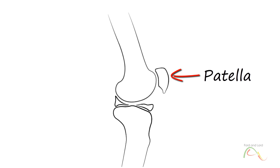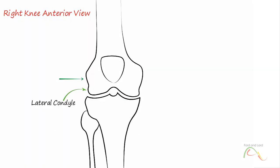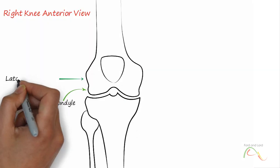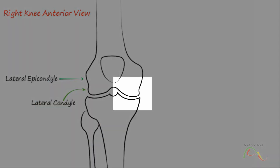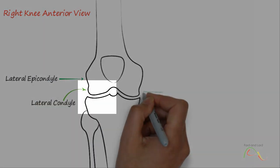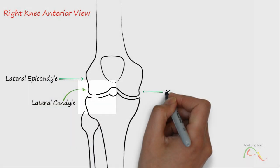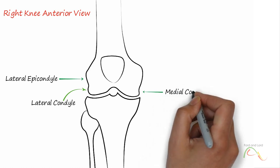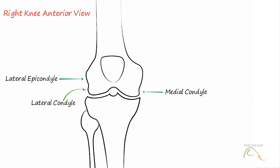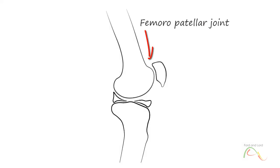The patella, which is also known as the kneecap, glides along a groove located at the distal end of the femur anteriorly. The joint therefore essentially consists of three articulations. The medial tibiofemoral joint and the lateral tibiofemoral joint are located between the medial and lateral condyles of the femur and the medial and lateral condyles of the tibia. The femoropatellar joint is between the patella and the distal femur. All of these articulations are enclosed within a single articular capsule.